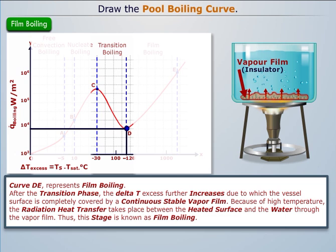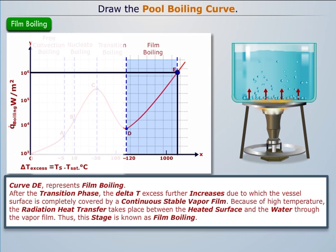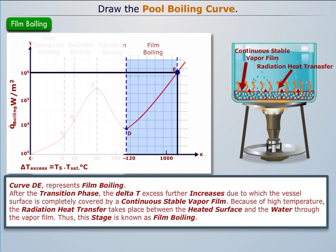Curve DE represents the stage of film boiling. After the transition phase, Delta T excess further increases, due to which the vessel surface is completely covered by a continuous stable vapor film. Because of the high temperature, radiation heat transfer takes place between the heated surface and the water through the vapor film. Thus, this stage is known as film boiling.